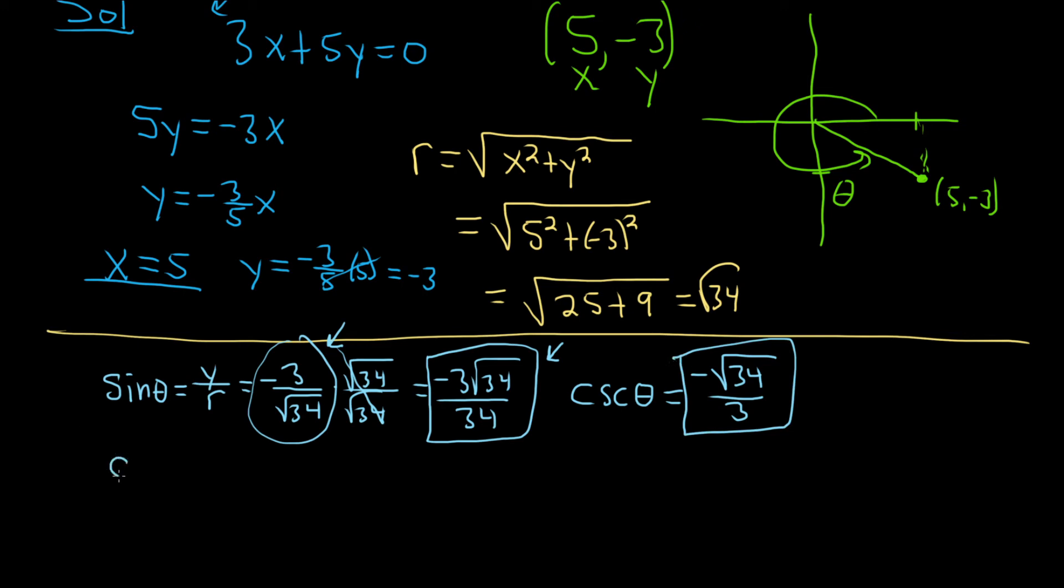Now let's find cosine. So cosine of theta is given by the formula x over r. So x here is 5, and r is the square root of 34. As before, if we want to rationalize, we'll multiply by the square root of 34 over the square root of 34. So this is equal to 5 times the square root of 34, and then the square root of 34 times the square root of 34 is just 34. So we get that on the bottom.